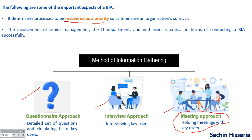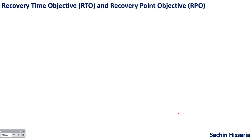In Business Impact Analysis, there are two very critical terms. The main purpose of doing the BIA is to identify the Recovery Time Objective and the Recovery Point Objective. These two terminologies are very important in BIA. Now let's see what RTO and RPO are with an example.